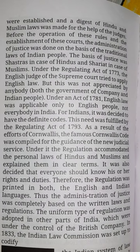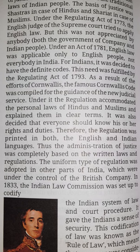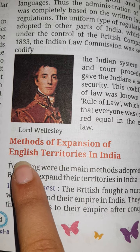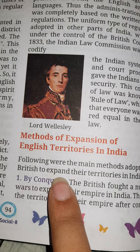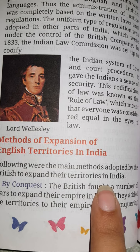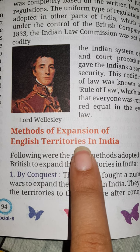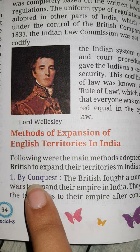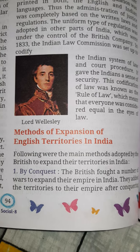There were different acts and laws formed for different types of crimes, and different punishments were made for different criminals. Now the next topic: Methods of expansion of English territories in India. Following were the main methods adopted by the British to expand their territories. First is by conquest — by conquering other regions in wars.